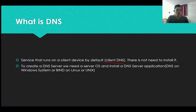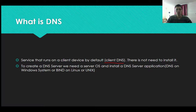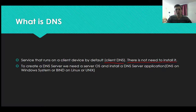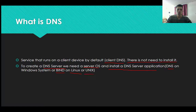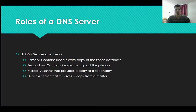What is the DNS service that runs on a client by default? It's called client DNS. On your computer, when you buy it, by default you have client DNS installed — it comes with the OS, whether Windows, Linux, Mac, etc. To create a DNS server, you need a server OS and you will need to install the DNS application. On Windows systems like Windows Server 2003, 2008, 2012, 2016, it's called DNS. On Linux or Unix systems, it is called BIND.